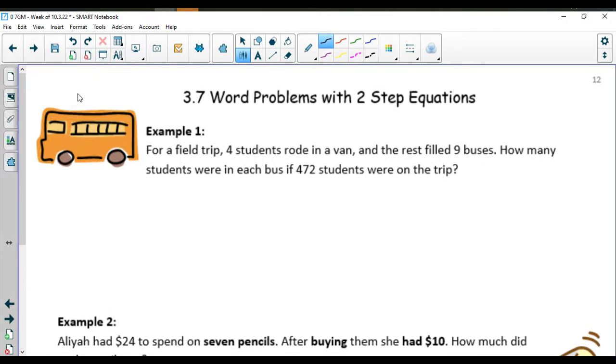When we do two-step word problems we're going to be looking for two things that are going to get added or subtracted and then we're going to be looking for what I call an equals number. One of these pieces is going to get an X and one of them is going to be just a plain old number. My plain old number here are the four students who rode in the van.